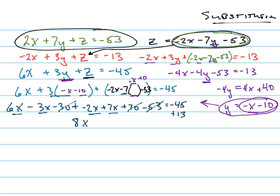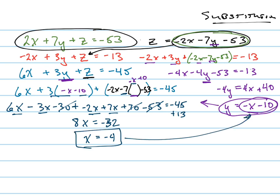I'm going to add thirteen to this side, so eight x equals negative thirty-two. This is where you can make silly mistakes anywhere along the way, so don't. Now that I have x I can plug that into the y equation to find y. So y equals positive four minus ten, which is negative six.